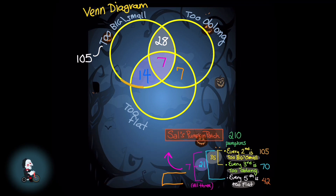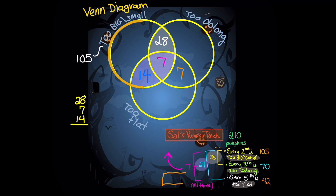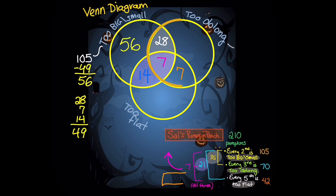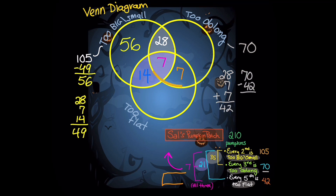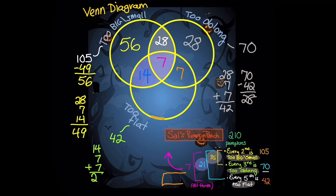Now it's time to fill in the rest of the circles. In the too big or too small circle, there was a total of 105 pumpkins. Subtracting away what's in the intersections, we get 105 minus 49, which is 56 pumpkins that are just too big or too small. In the oblong category, subtracting the intersections from 70 pumpkins gives us 28 pumpkins that are just oblong. And in the final category, there are 42 pumpkins that are just too flat, and subtracting the intersections gives us 14 that are just too flat.